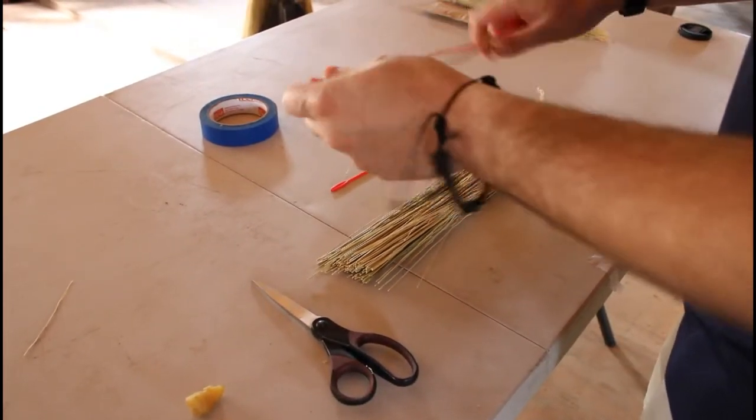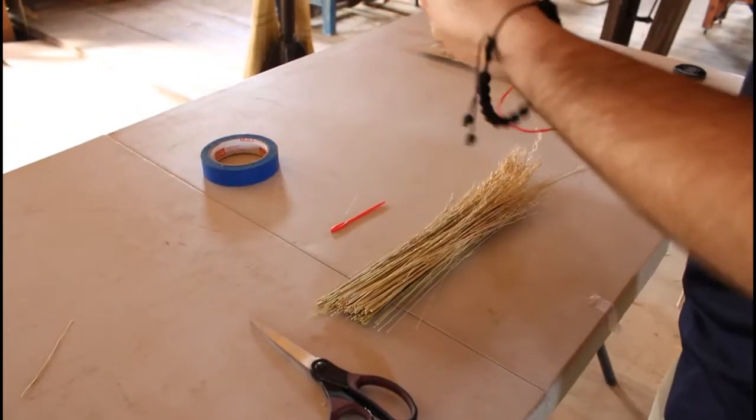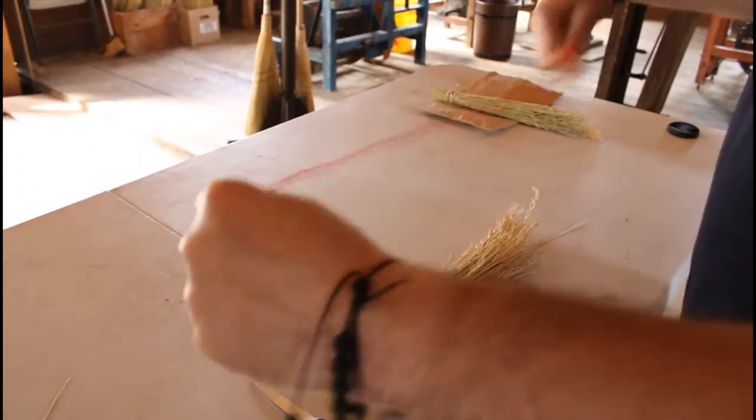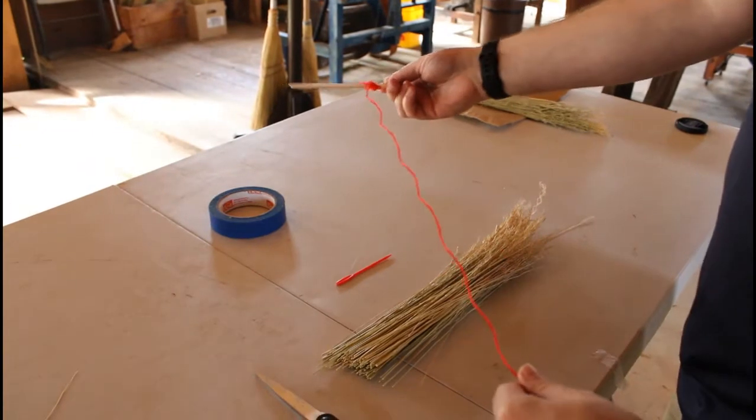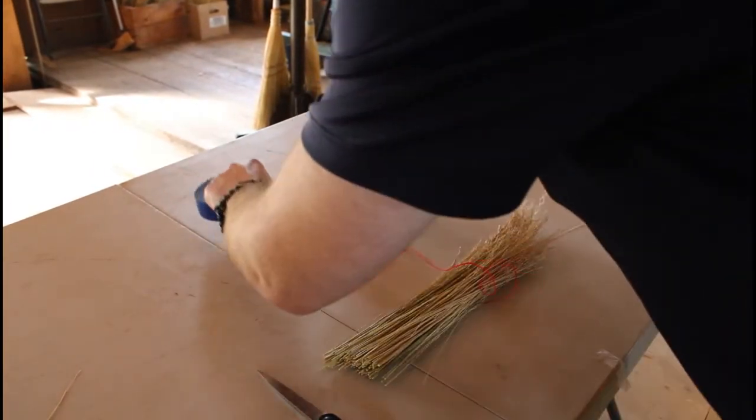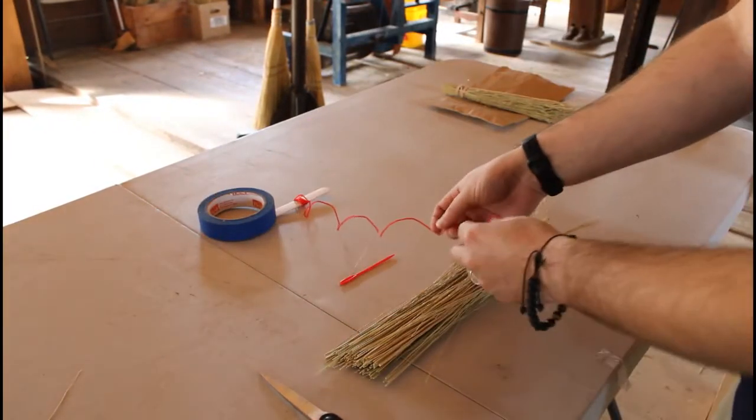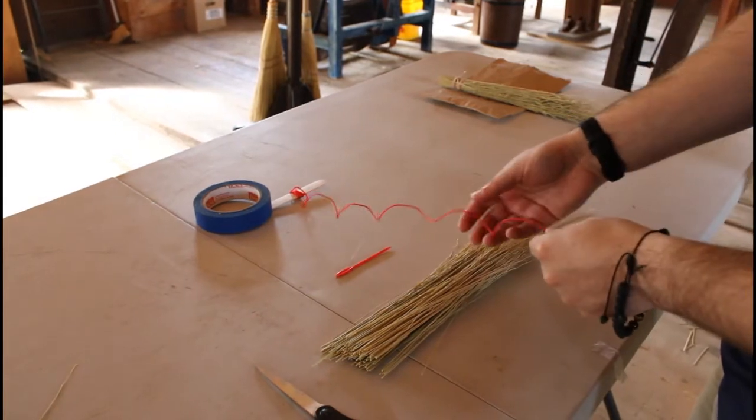The next step we want to do is we can unravel our twine a little bit. What I usually like to do is I like to put the craft stick under a heavy object. I'm going to use this roll of tape but I would definitely recommend at home you use something heavy like a book.